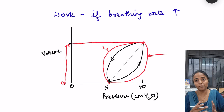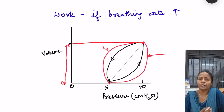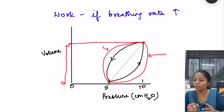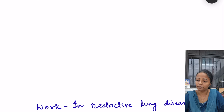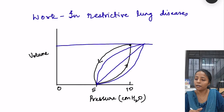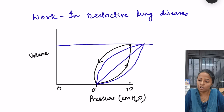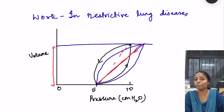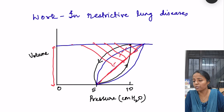Coming to the diseases — what happens in obstructive and restrictive lung diseases. Restrictive lung disease is a problem in which it becomes difficult to expand the lungs or the chest wall, so for the same expansion the muscles need to contract more. The graph shows that for the same change in volume, the pressure-volume relationship is different — the central line has moved towards the right side, which is a shift in the compliance graph. This much becomes the elastic or compliance work in restrictive lung disease.